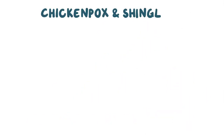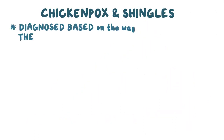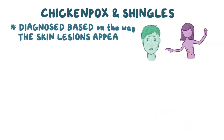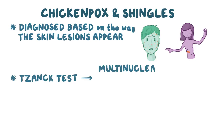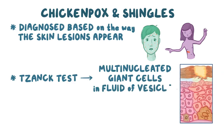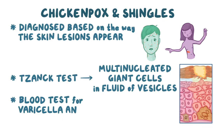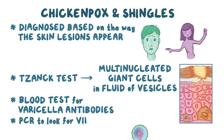Chicken pox and shingles are usually diagnosed based on the appearance of the skin lesions, but the diagnosis can be confirmed by using the Tzanck test to look for multinucleated giant cells in the fluid of the vesicles. More commonly, blood tests for varicella zoster antibodies or PCR can be done to look for viral DNA.